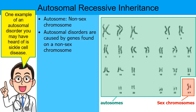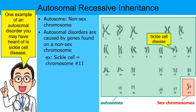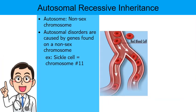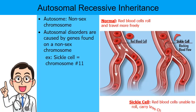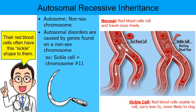One example of an autosomal disorder you might have heard of is sickle cell disease. It's autosomal because the gene that causes sickle cell has been located on chromosome 11, which is an autosome. Normally, red blood cells will roll and travel freely through the blood vessels. But for people with sickle cell, the red blood cells are misshapen and deformed — less likely to roll freely, they carry less oxygen and are more likely to clog. The red blood cells are often sickle-shaped.